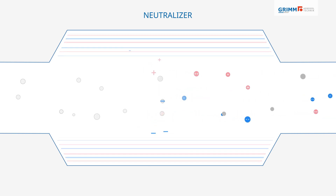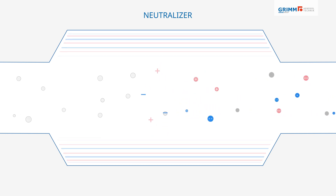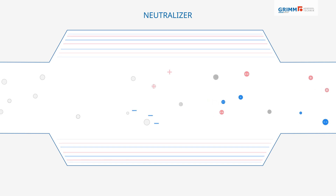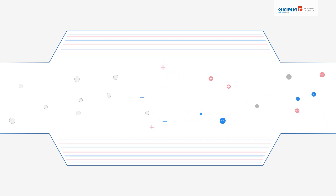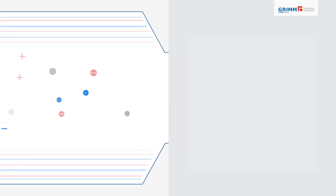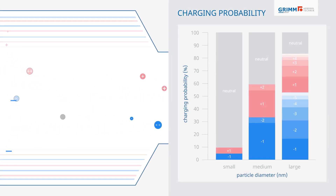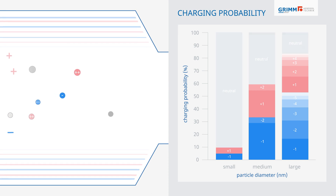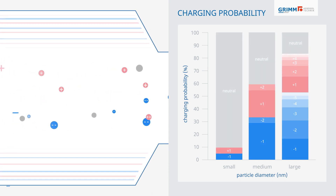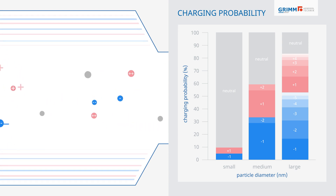Neutral, positive and negative particles are the result. A known particle charging probability is the basis for later corrections of the particle size distribution. This probability distribution shows how many neutral, positively and negatively charged particles may be included in a size class.